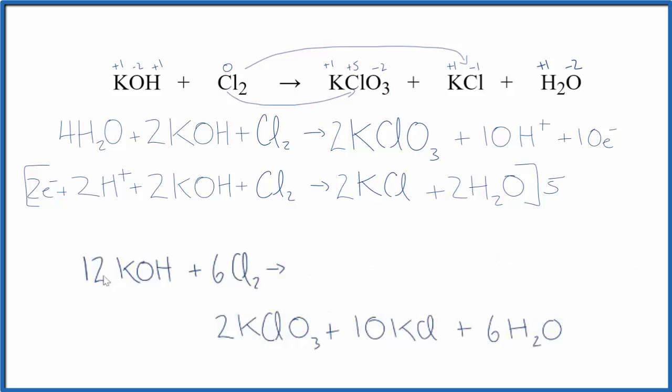One last thing we should do is probably reduce this down to the lowest whole number. So we have twelve, six, two, ten, six. Let's cut everything in half. So the ratio is the same, except this is just a little neater. This is a very complicated reaction to balance, but you can always check your work.